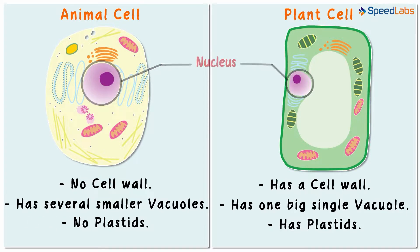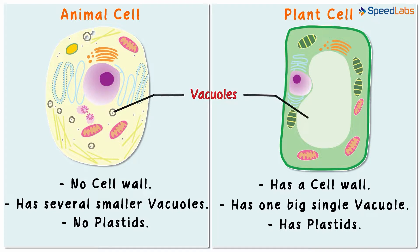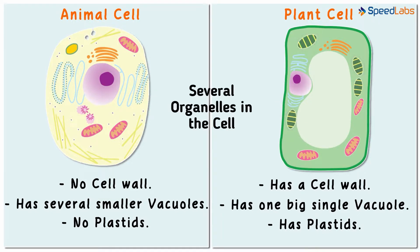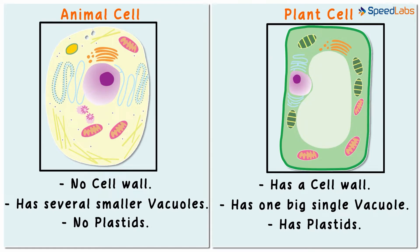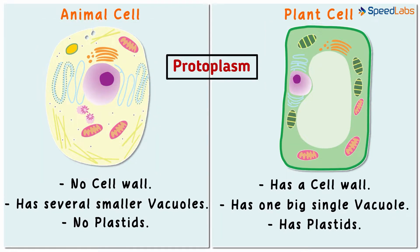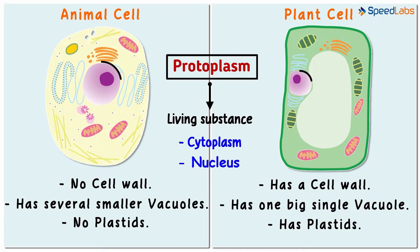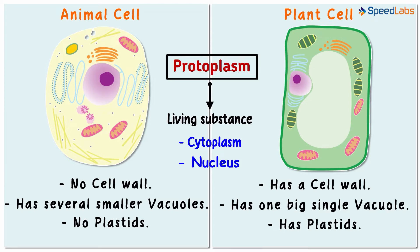Apart from the nucleus, vacuoles, and plastids, there are several other organelles in the cell. You will study them in our other videos. The entire content of a living cell is called protoplasm — it is the living substance of the cell, and it includes the cytoplasm and the nucleus. We will see how cells can be differentiated in other ways in our next video.